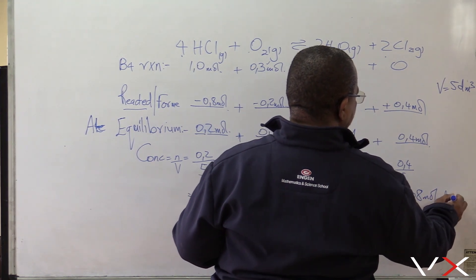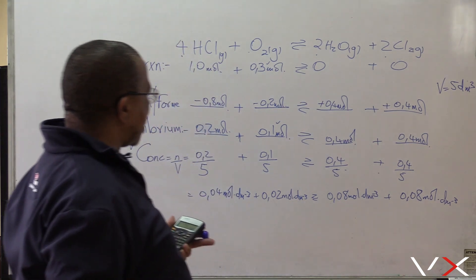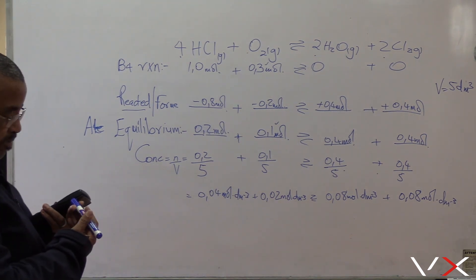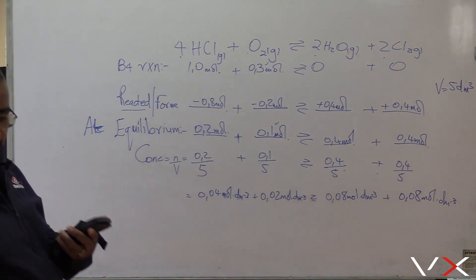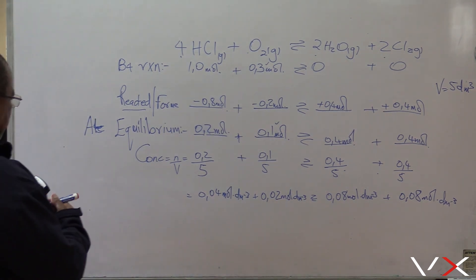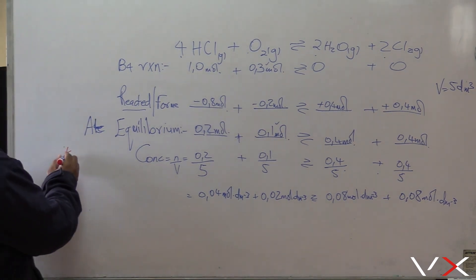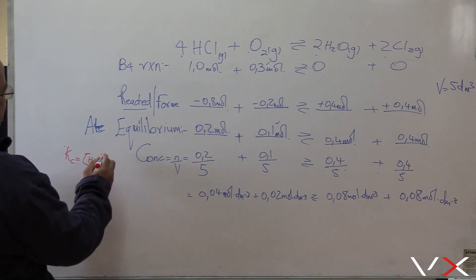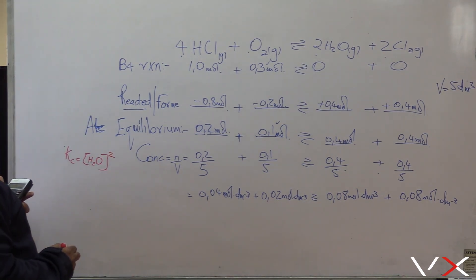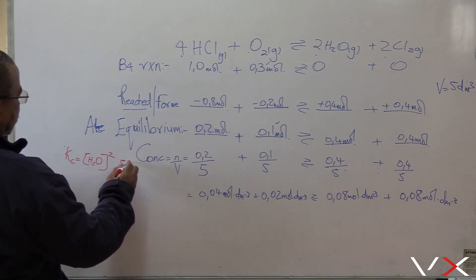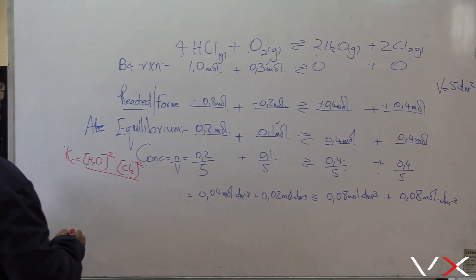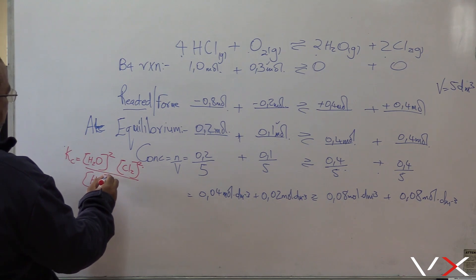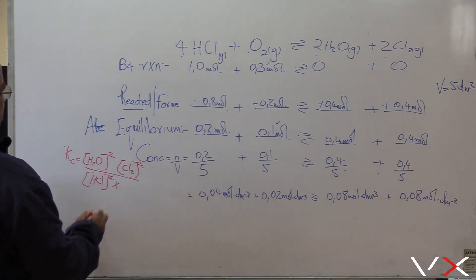Now we want the value of Kc. Kc equals concentration of products over reactants. Kc = [H2O]² × [Cl2]² divided by [HCl]⁴ × [O2]. So Kc = (0.08)² × (0.08)² divided by (0.04)⁴ × 0.02.